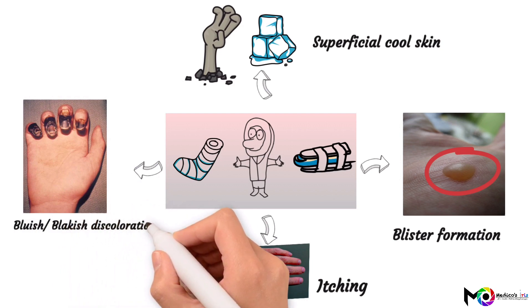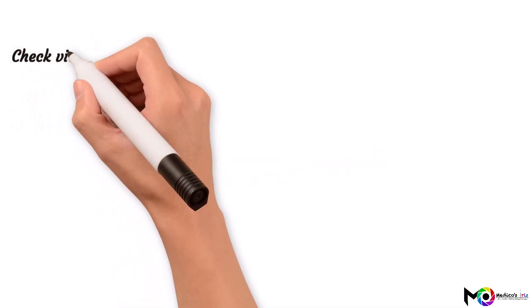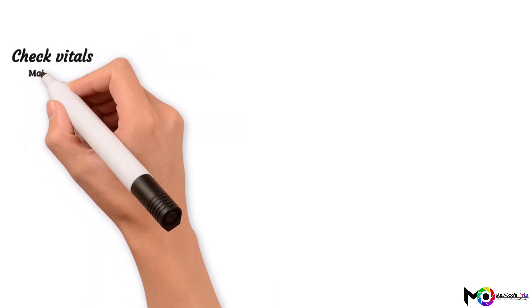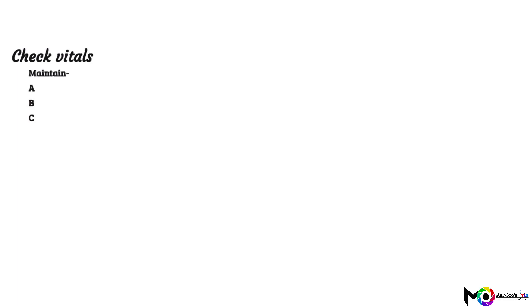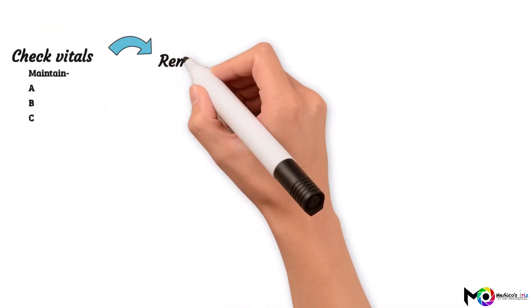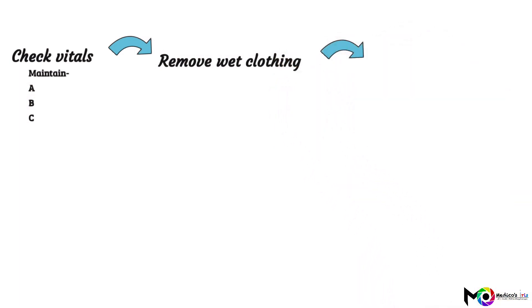If a suspected or confirmed case of frostbite comes, check vitals of the patient. Always give priority to airway, breathing, and circulation first, then focus on the frostbitten part. If the clothing of the patient is wet, change it as it can worsen the frostbite or hypothermia. Treat hypothermia first.